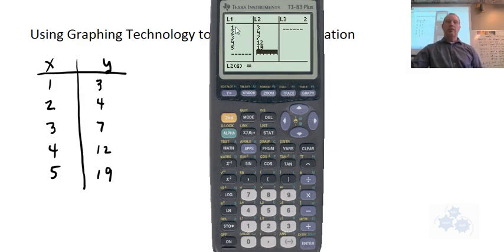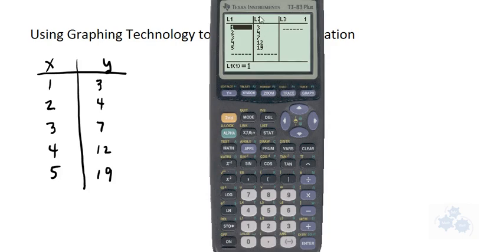So you should have one, two, three, four, five numbers in each list. So if you go up and highlight this number nineteen right here, it should say list two with a bracket of a five in there. So that's your fifth item or your fifth element in the list. You need to have the same number of each.